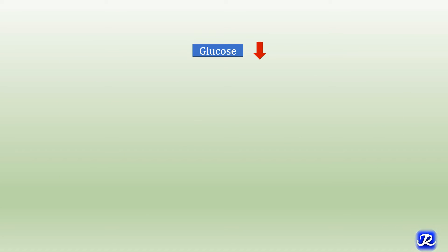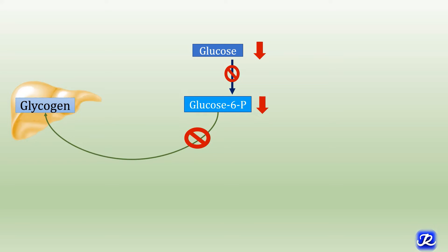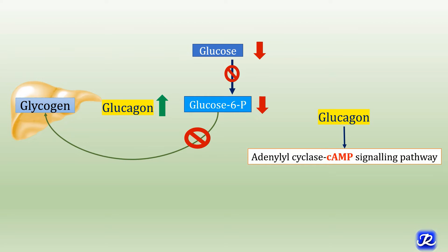In fasting condition, glucose level is decreased and also the glucose 6-phosphate level, so there is no conversion of glucose 6-phosphate to glycogen, meaning glycogenesis is inhibited. In this condition, glucagon level is increased and it acts through the adenyl cyclase cyclic AMP signaling pathway, where cyclic AMP is the second messenger causing phosphorylation of enzymes.